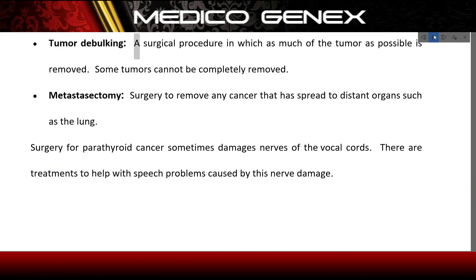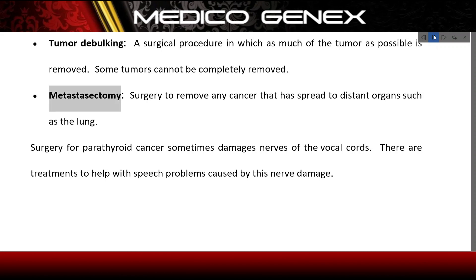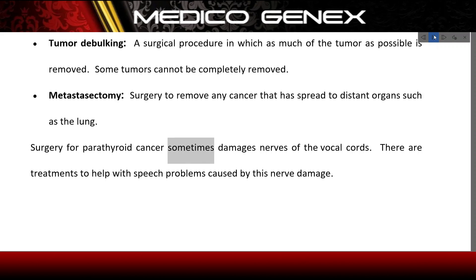Tumor debulking: a surgical procedure in which as much of the tumor as possible is removed; some tumors cannot be completely removed. Metastasectomy: surgery to remove any cancer that has spread to distant organs such as the lung. Surgery for parathyroid cancer sometimes damages nerves of the vocal cords, but there are treatments to help with speech problems caused by this nerve damage.